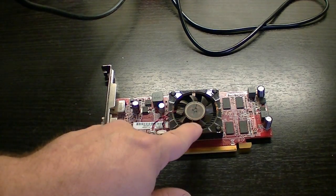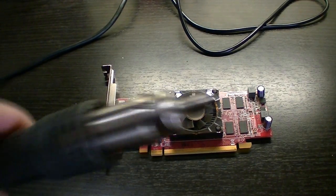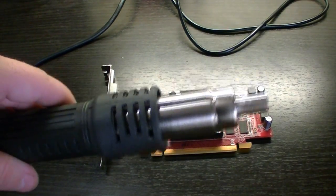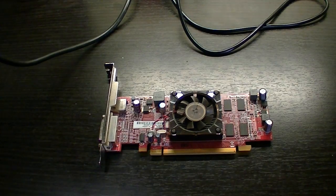Okay I got an old video card. Let's see how good the hot air actually works. Got a big tip on here and it's set for 400 degrees Celsius. We're going to see if we can try to remove one of these little memory chips off of here.